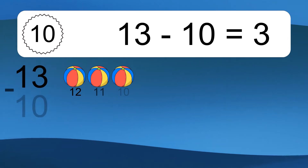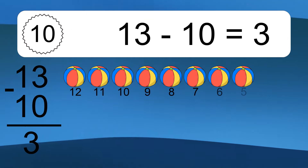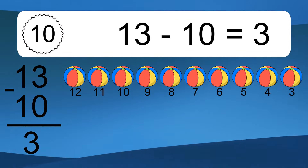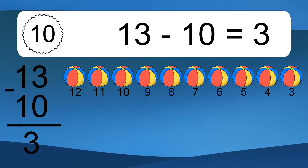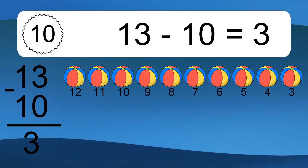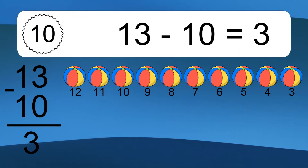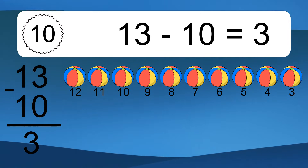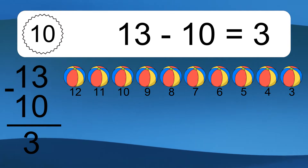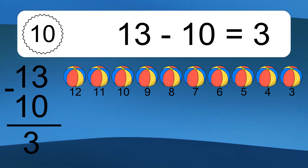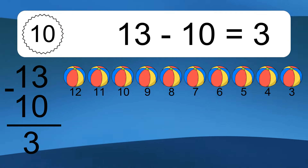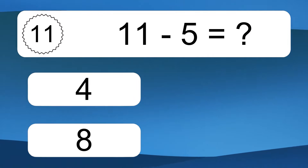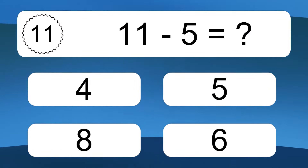13 minus 10 equals 3. Let's count it: 12, 11, 10, 9, 8, 7, 6, 5, 4, 3. 11 minus 5 equals what?